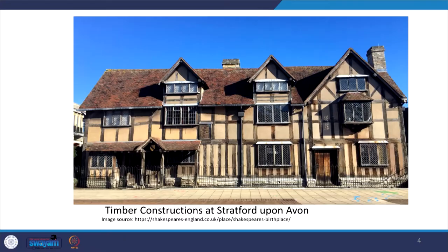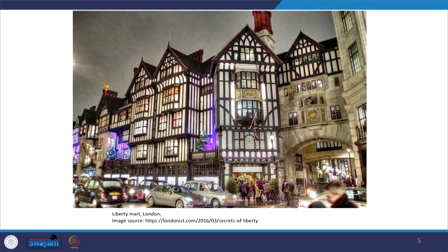In many of these traditional houses, we can also find how framed construction mixes with earthen material. Traditional houses demonstrate a combination of both timber and loam materials. For example, in Stratford-upon-Avon we can see a combination of timbers as structural elements filled with loam materials. Very much in the heart of London, we can see Liberty Mart, which shows a similar model of the combination of wooden and composite loam materials.